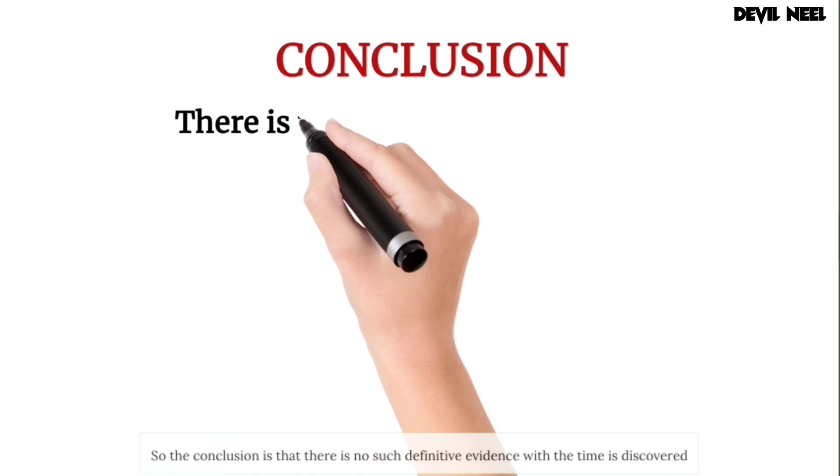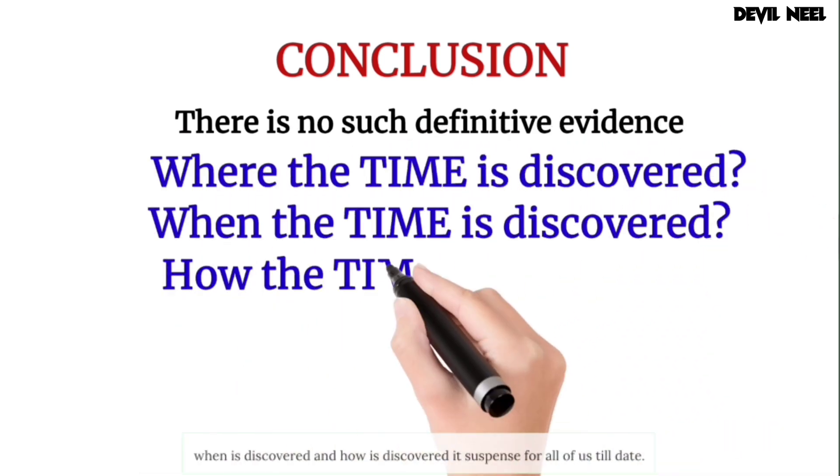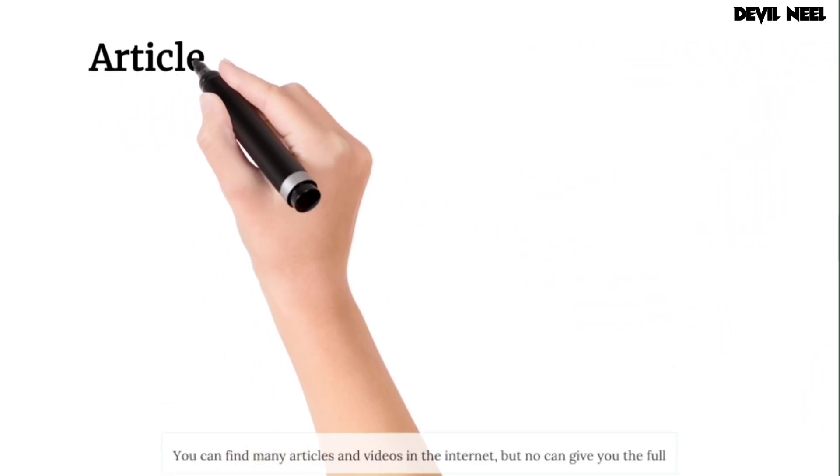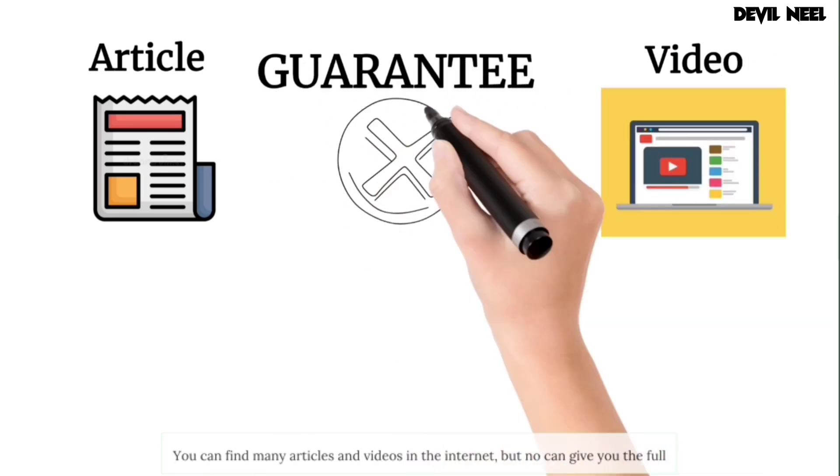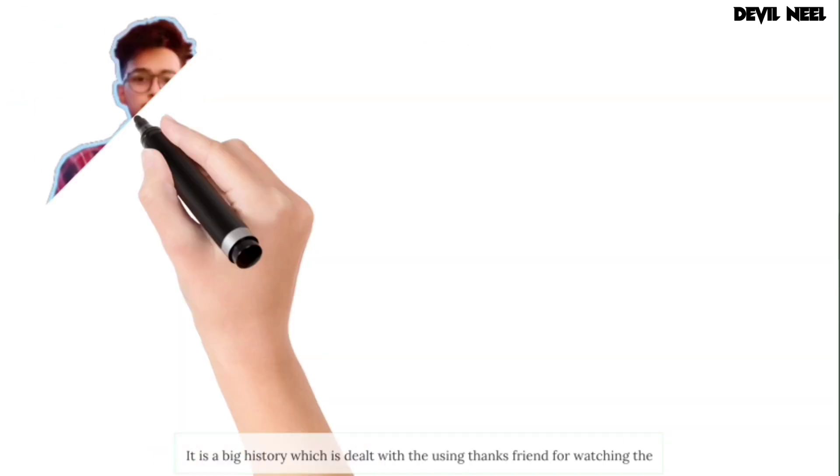So, the conclusion is that there is no such definitive evidence where time was discovered, when it was discovered, and how it was discovered. It's a suspense for all of us till date. You can find many articles and videos on the internet, but no one can give you full surety. It is a big mystery which died with Yuzing.